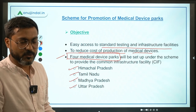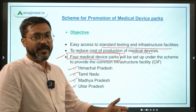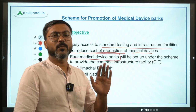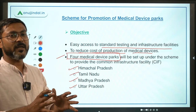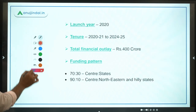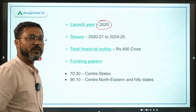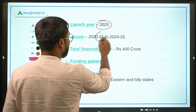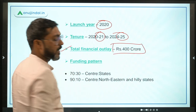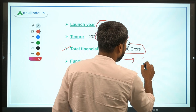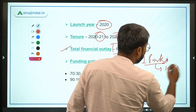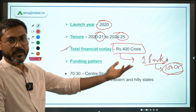These four states were selected after a proper assessment for setting up medical device parks, and common infrastructure facilities will be provided in them. The scheme was launched in 2020 for a duration of 5 years, from financial year 2021 to financial year 2025. The total financial outlay is rupees 400 crores. For one park, a maximum of rupees 100 crores will be provided — so four parks means 400 crores.